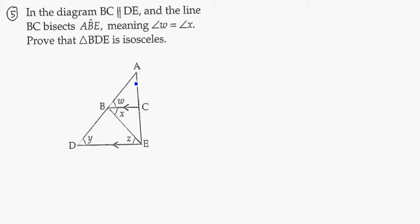A, B, E. So since it splits it in half, that means that these two angles are equal to each other. Bisect meaning split in half.